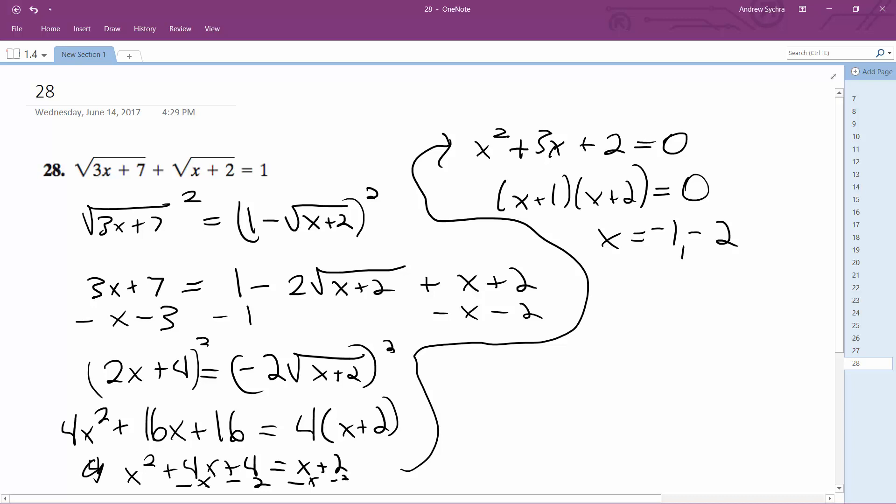How about negative 2? Negative 2, so that ends up being 1. Yeah, negative 2 does work. So x is equal to negative 2. Even though we ended up getting negative 1 as a result, it doesn't check out. Negative 2 is the solution.